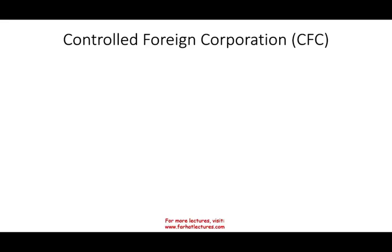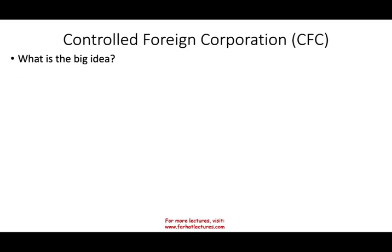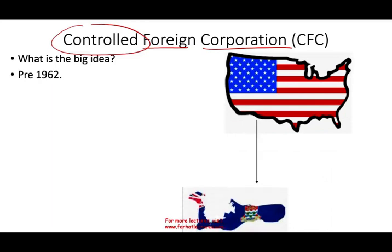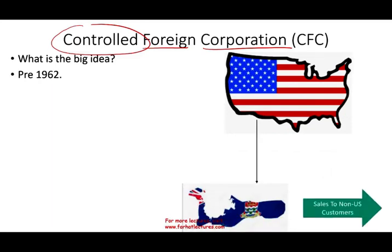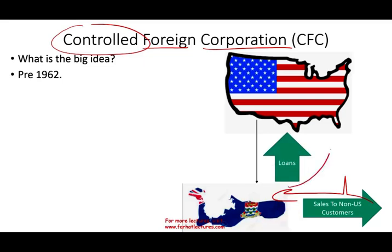Let's talk about Controlled Foreign Corporation, or CFC. What is the big idea? It's located outside the U.S., it's a corporation, and somehow someone controls it. Before 1962, U.S. companies would set up a subsidiary in a tax-haven country like the Cayman Islands, and the Cayman Islands would record the sales to non-U.S. customers. The money comes into the Cayman Islands, taxed at a low rate, and then the subsidiary would lend money to the parent company in the U.S. The money would transfer to the U.S. in the form of loans rather than dividends, so the money would sit in the Cayman Islands tax-deferred.